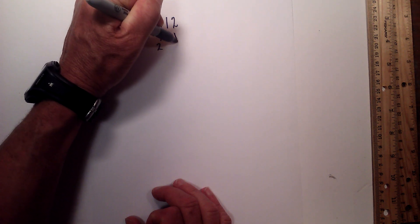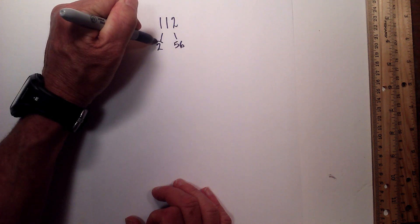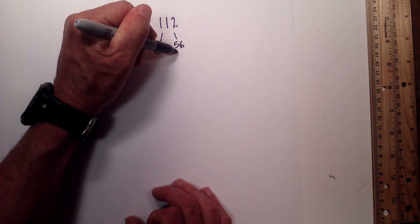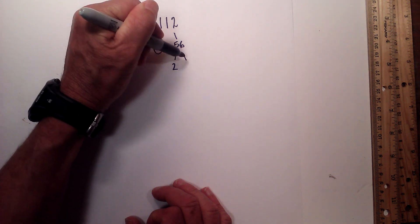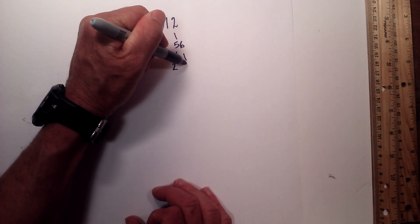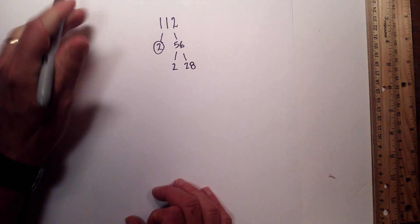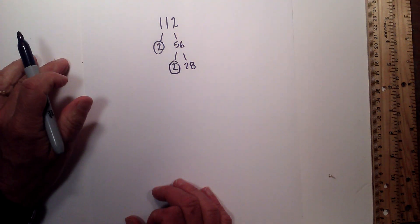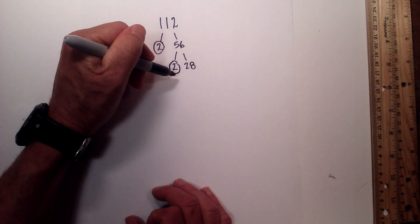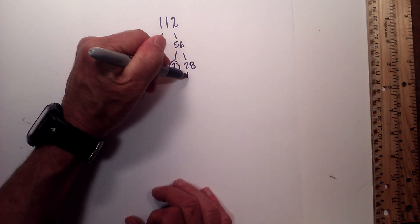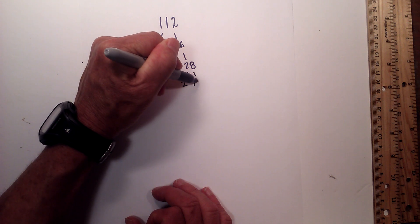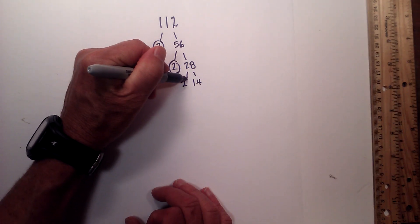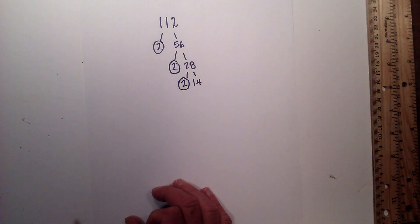2 times 56 equals 112. I will circle the 2. Next, 2 times 28 equals 56. I will circle the 2 because it is prime. Next, 2 times 14 equals 28. I will circle the 2 because it is prime.